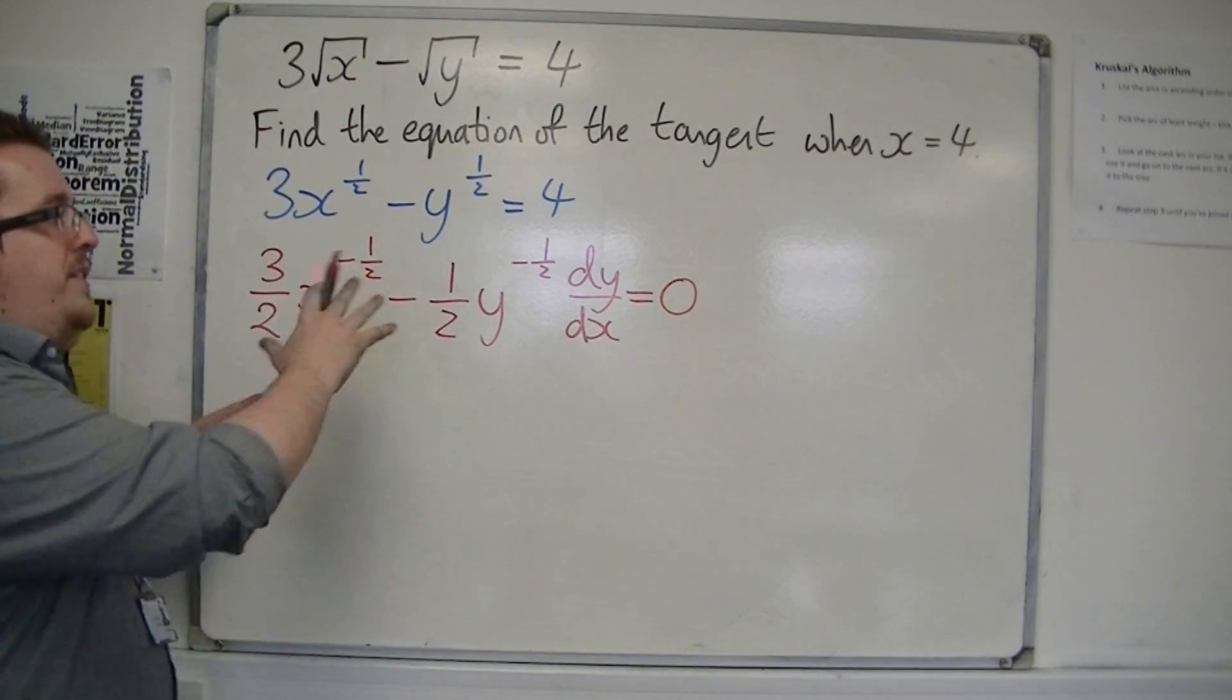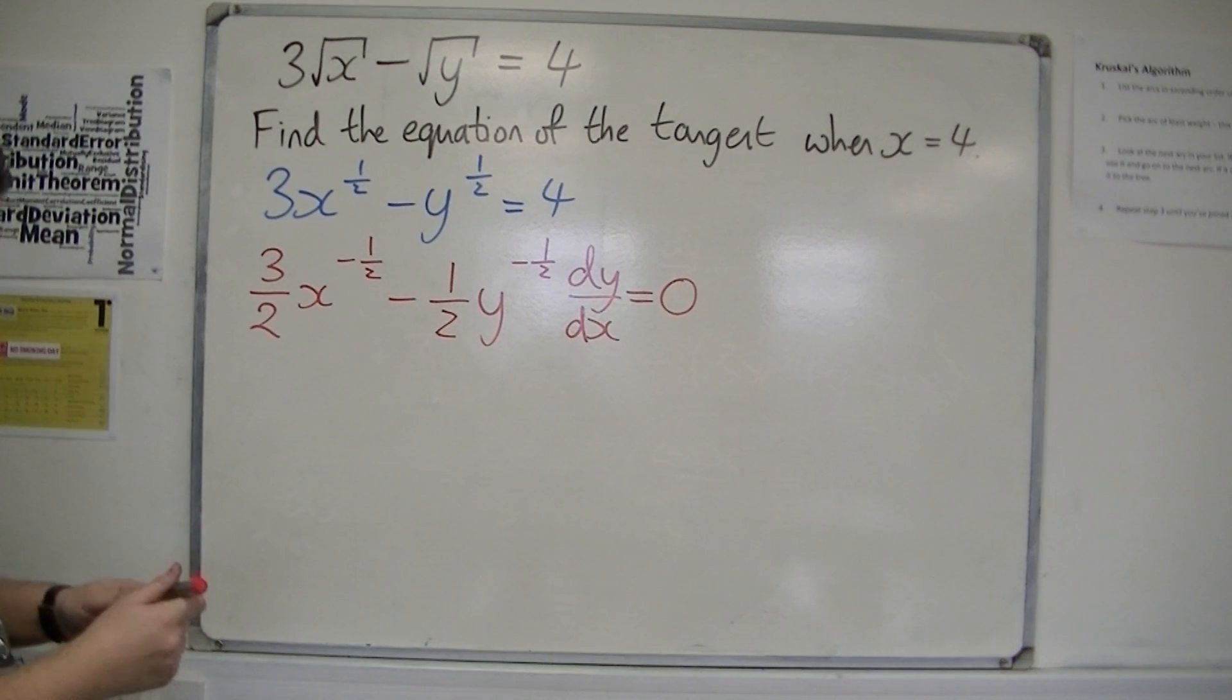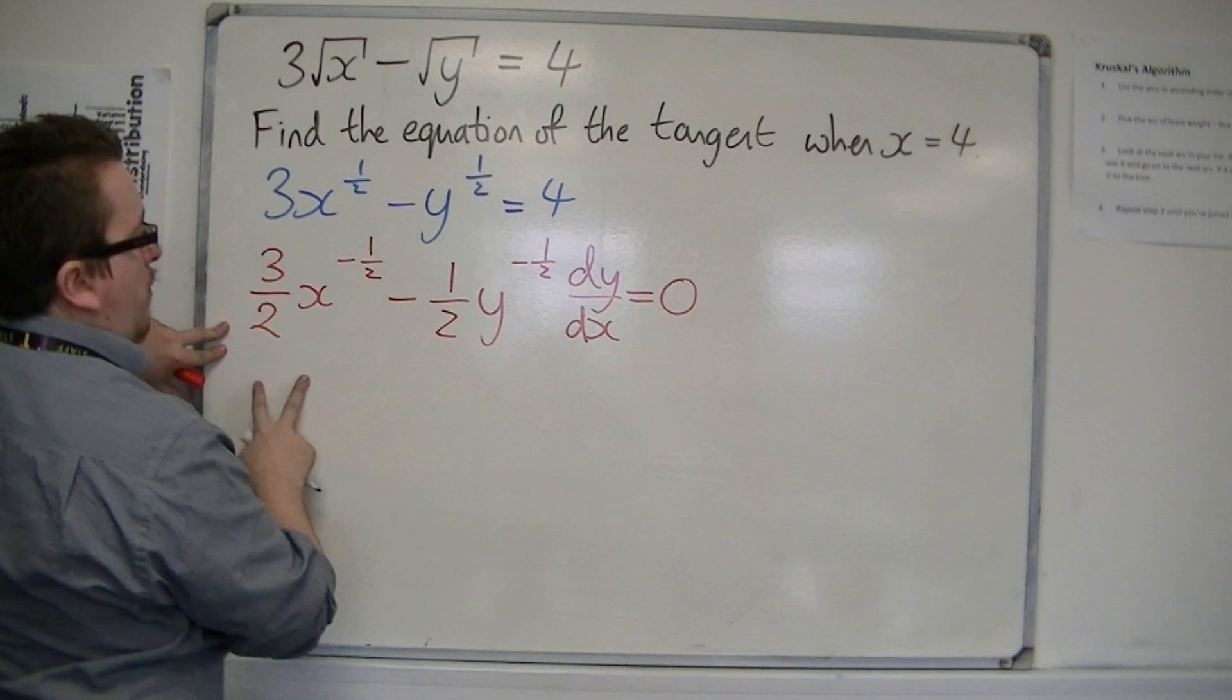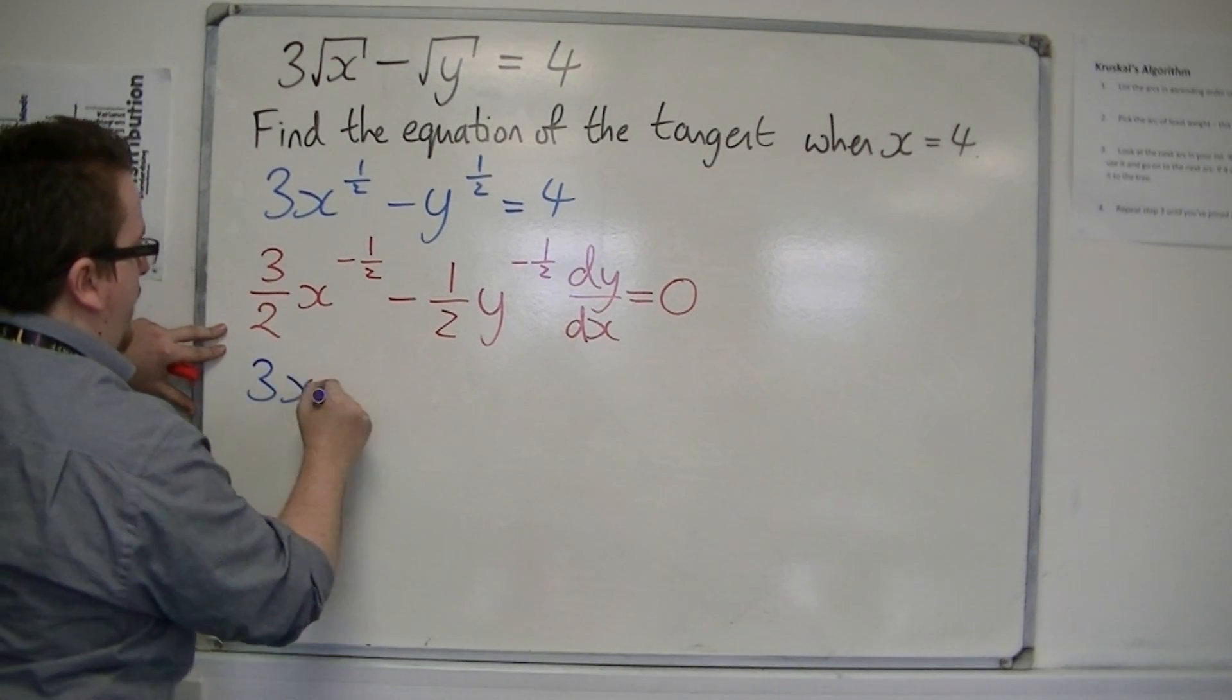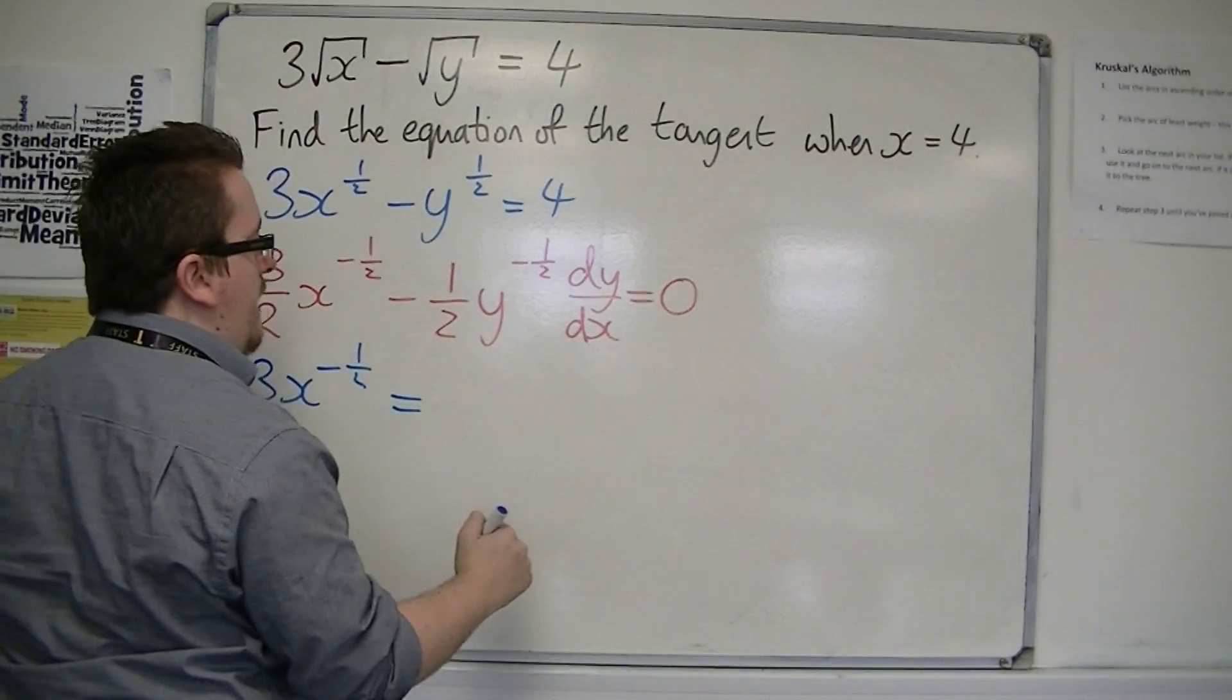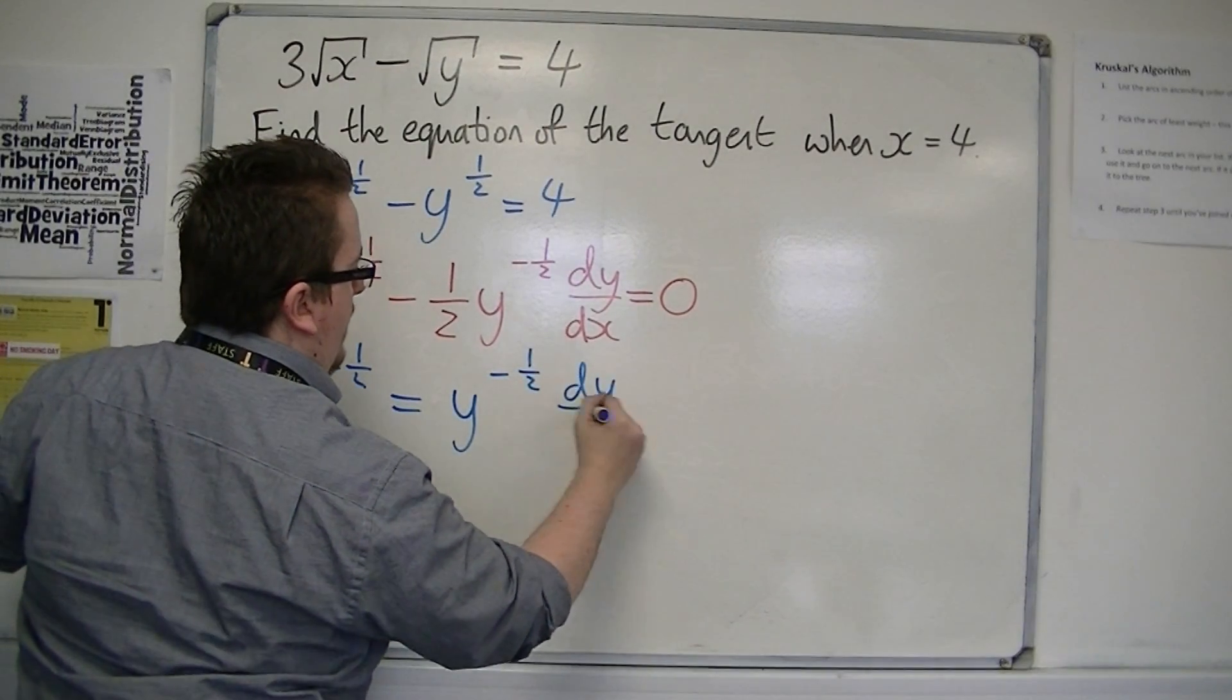So now I'm going to need to rearrange this to get dy by dx is equal to. So, what I'm going to do here is multiply through by 2 first, gets rid of that half, and put this onto the right hand side of the equation. So we get y to the minus 1 half dy by dx.